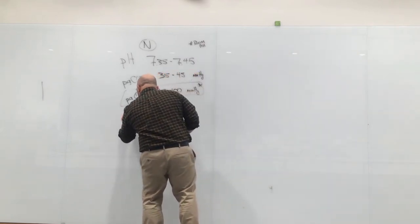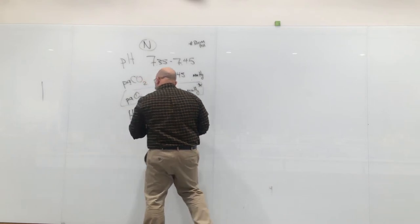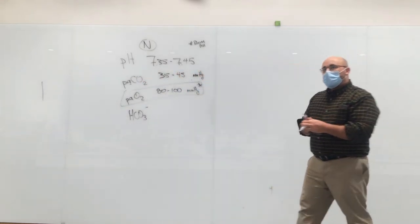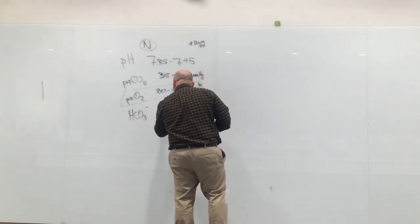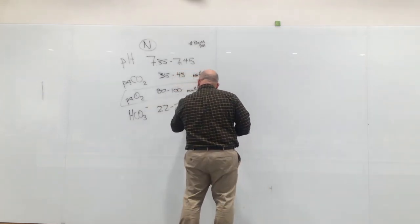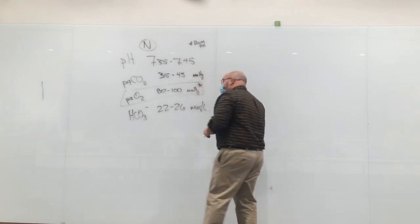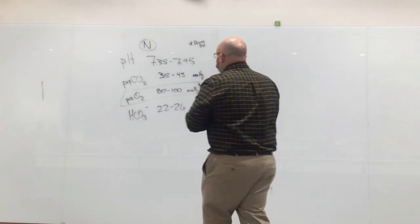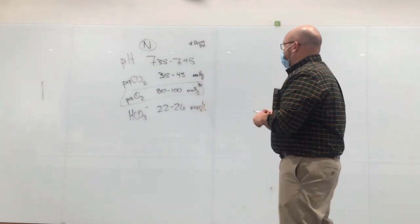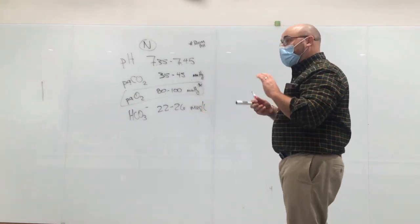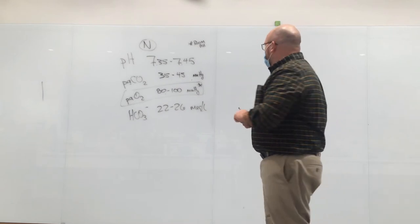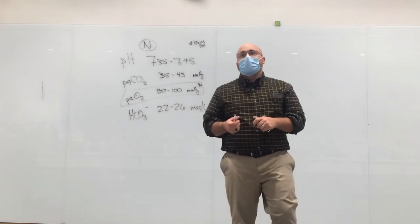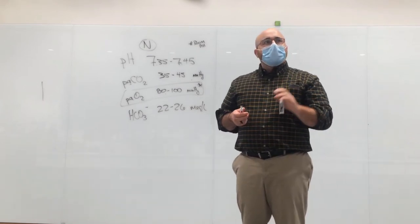Next is bicarb, which is important in acid-base balance. Normal for bicarb is 22 to 26, measured in mEq per liter — milliequivalents per liter — which is a volume. It's also sometimes measured in millimoles per liter, and every facility may have a slight flux in the normal value.